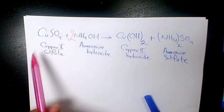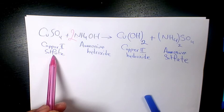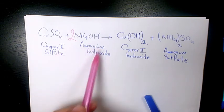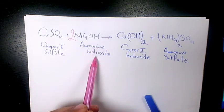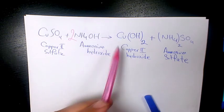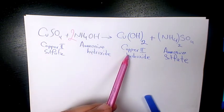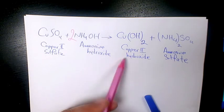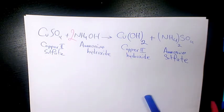So per one mole of copper 2 sulfate we need two moles of ammonium hydroxide to have this stoichiometric relationship, and that will produce one mole of copper 2 hydroxide and ammonium sulfate. Thank you for watching and have a great day.